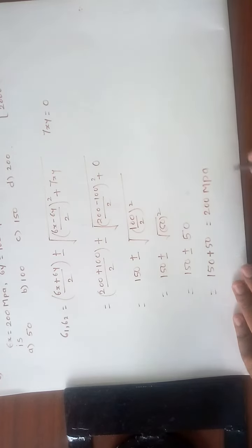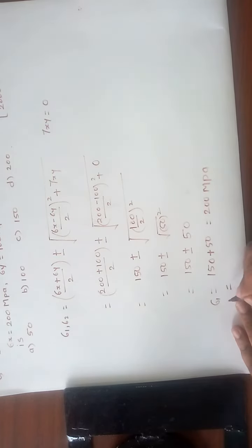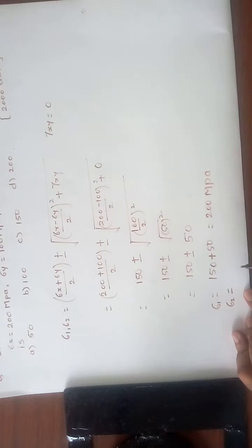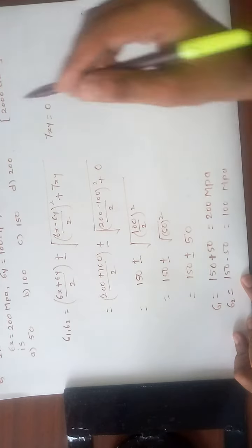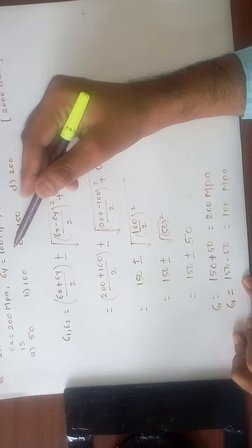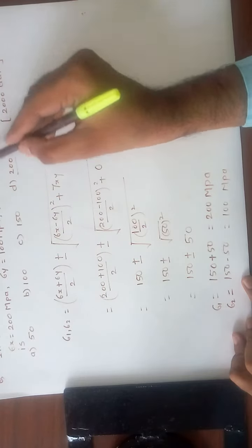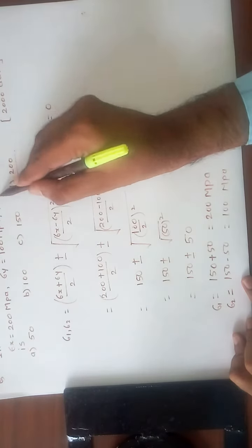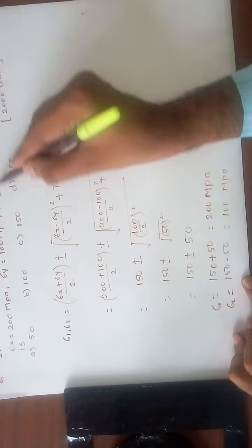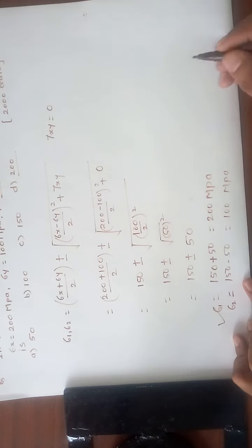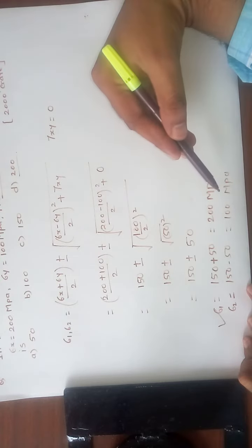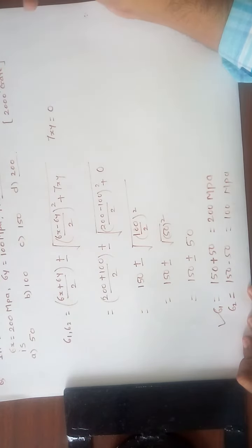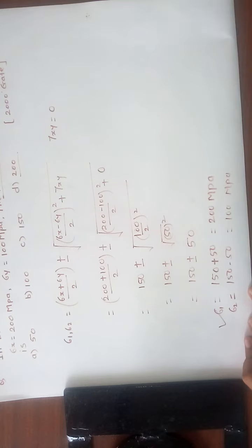The minimum principal stress is 150 − 50 = 100 MPa. Among the options, 200 MPa is given, which is the maximum principal stress — that is our required answer. By this formula, you can calculate the maximum and minimum principal stresses in any component. Thank you.